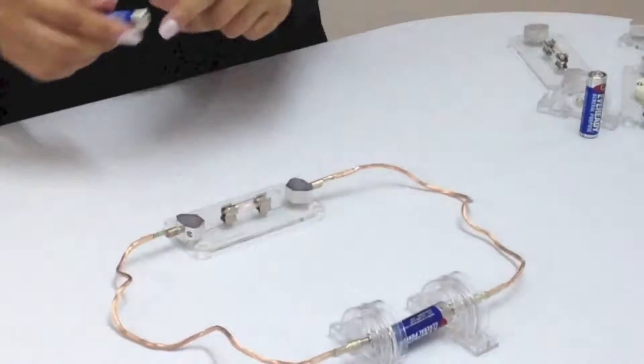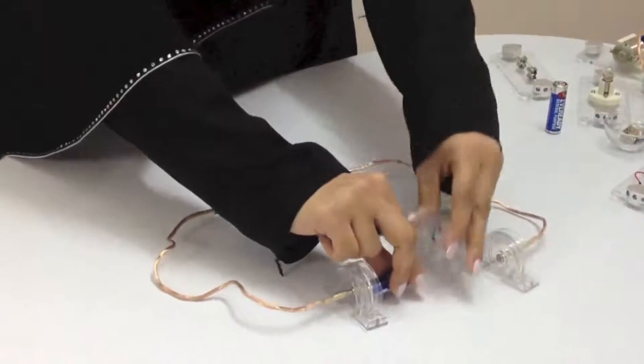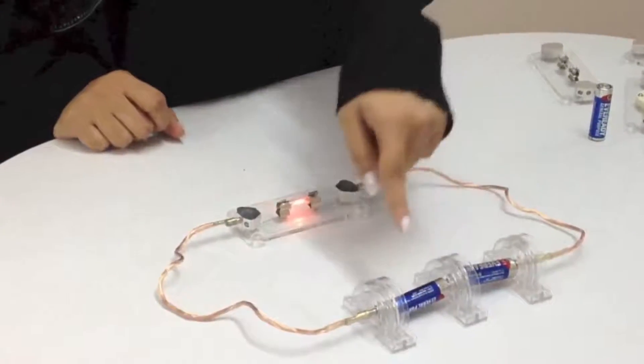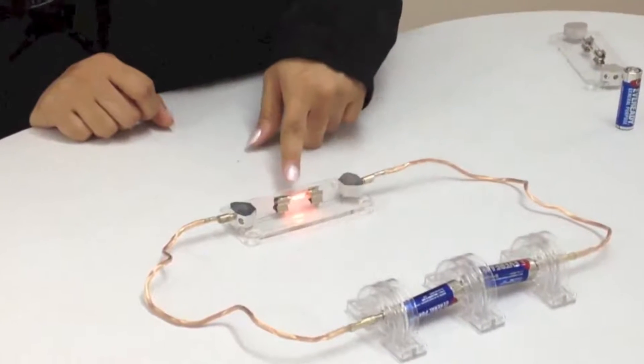Now I will add another battery to the circuit. Now this bulb has two batteries, so the bulb is brighter.